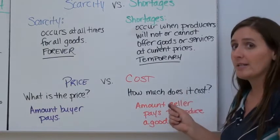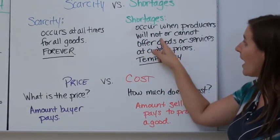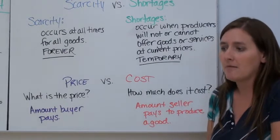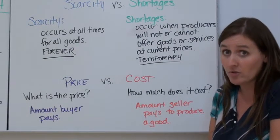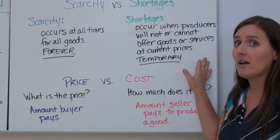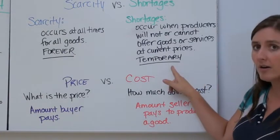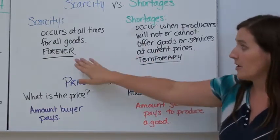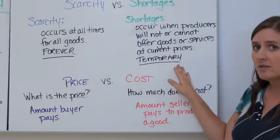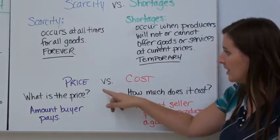Shortages are something different — they're temporary. A shortage occurs when producers will not or cannot offer goods or services at current prices. For example, if a hurricane destroys all the orange trees, there's not enough orange juice to produce at a certain price — that's a shortage. Scarcity is forever; shortages are temporary.